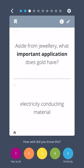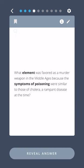What element was favored as a murder weapon in the Middle Ages because the symptoms of poisoning were similar to those of cholera, a rampant disease at the time? Arsenic.